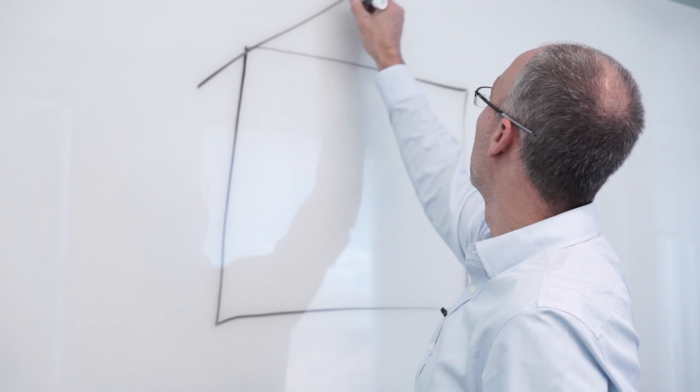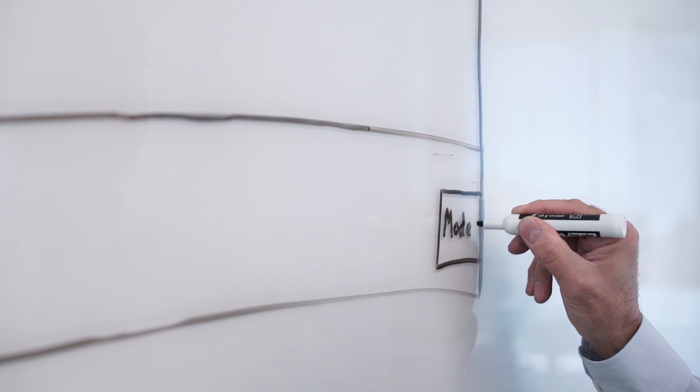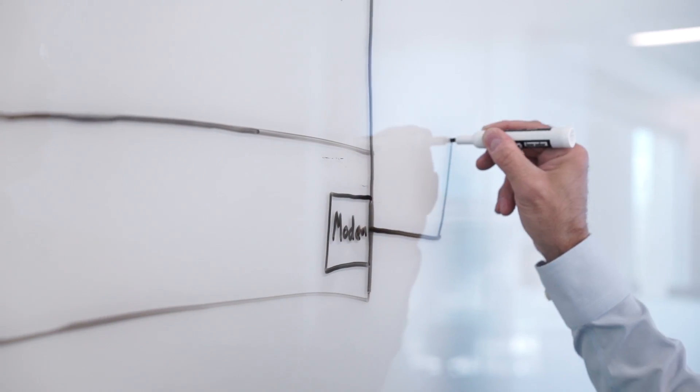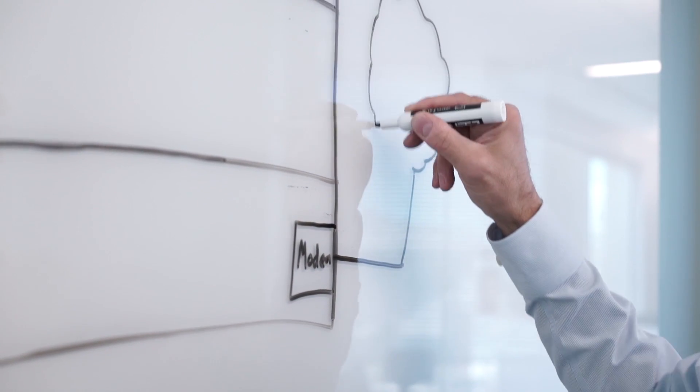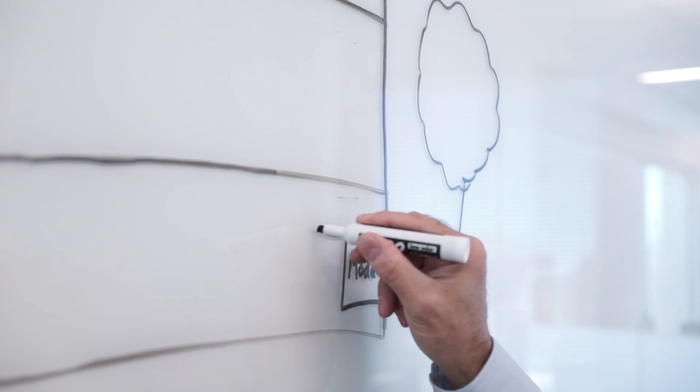We'll draw a house here. You probably have your internet drop coming in on the first floor or the basement. This goes out to the internet and you'll put your cable modem down here.